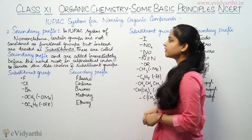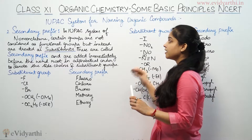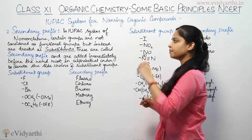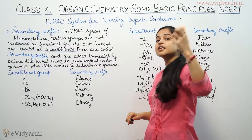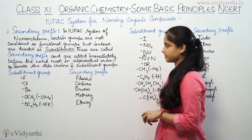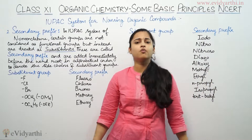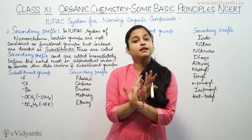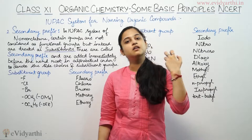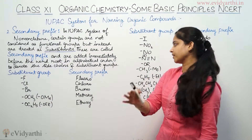In the IUPAC system of nomenclature, certain groups are considered as functional groups. But certain groups are not considered as functional groups; instead, they are treated as substituents. These are called secondary prefixes. In IUPAC nomenclature, there are many groups that we don't consider as functional groups, and what we generally consider as substituents are called secondary prefixes.